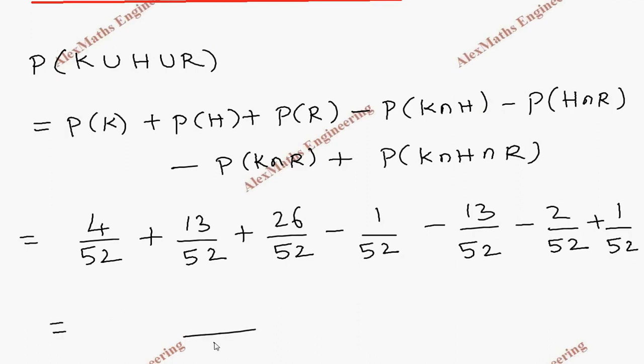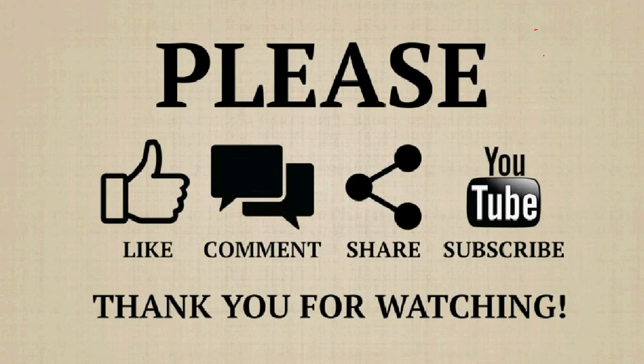So we make the common denominator 52. We add all the numerators: 4 plus 13 which is 17 plus 26 which is 43. Then we have minus 1, minus 13, minus 2, totally minus 16, and at the end we have plus 1. So out of simplification of this, we get 28 by 52. We can cancel by 4. This becomes 13 and this becomes 7.